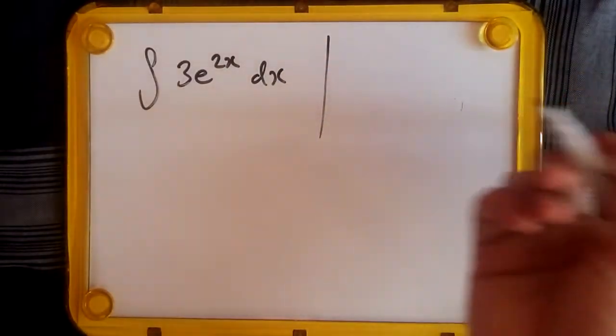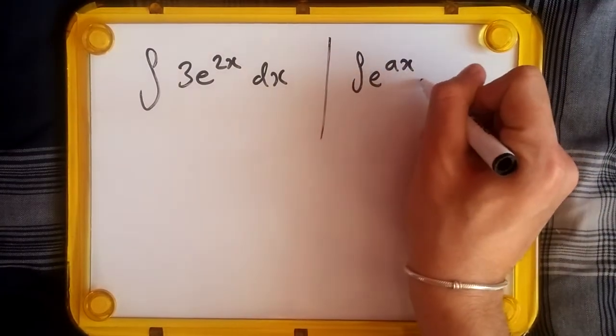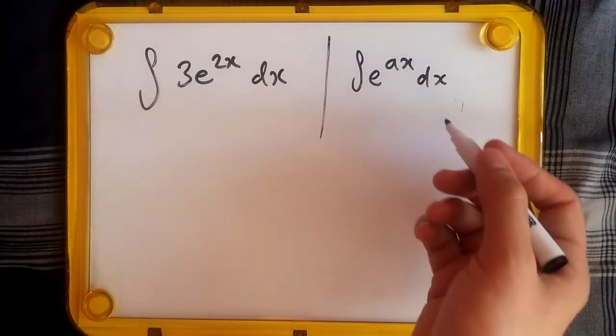Before we do this, we need to know how to integrate a usual exponential. Suppose we had e^ax where a is a constant. The idea is: integrate e^x as it is, and then the constant from x, you drop it down.